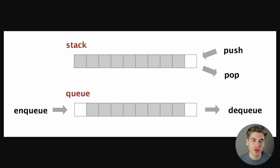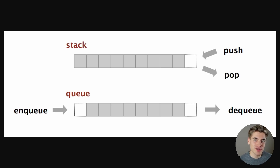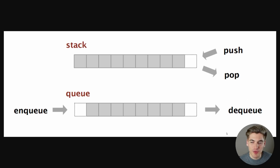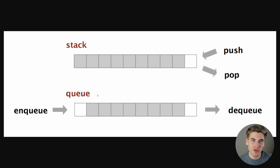Queues are just like a line in real life — you go to the very back when you enter, and the person at the front is the first one taken off. This is first in first out, or FIFO. The methods used are typically enqueue and dequeue — enqueue puts the item in the back, and dequeue takes it off the front. Understanding when to use a stack versus a queue and how they work is super important for landing your interview.